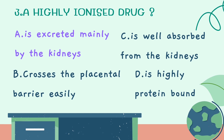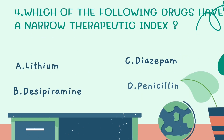Fourth question: which of the following drugs has a narrow therapeutic index? Options: Lithium, Desipramine, Diazepam, Penicillin. The correct answer is Lithium. Examples of narrow therapeutic index drugs include Digoxin, Digitoxin, Phenytoin, Warfarin, and Theophylline. These drugs have a small margin between therapeutic and toxic doses.